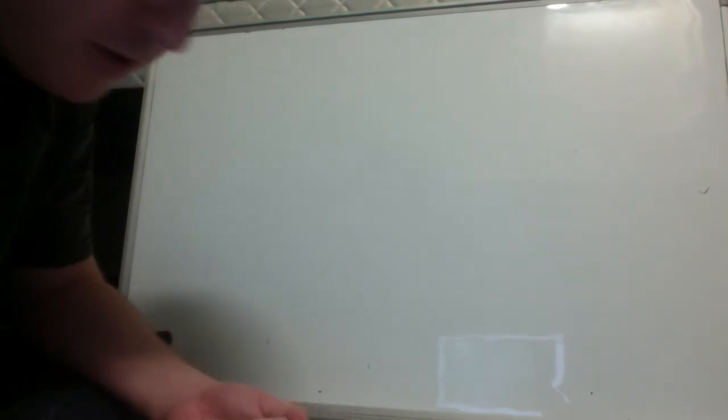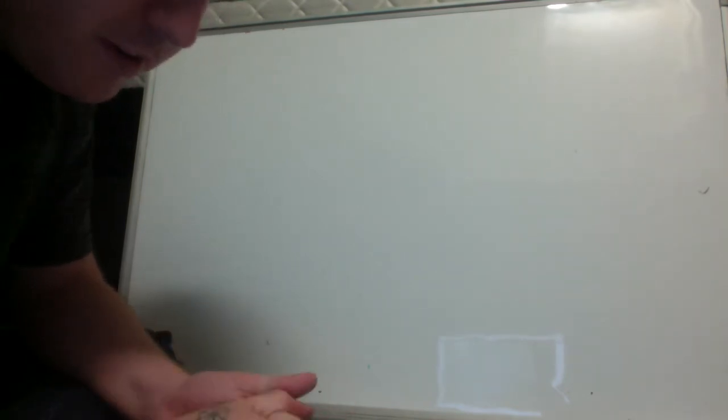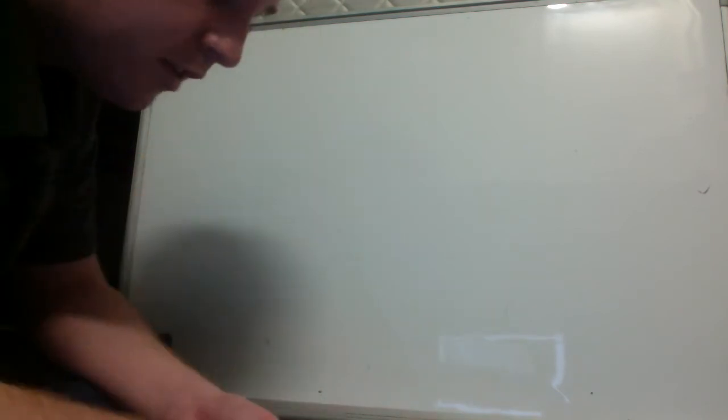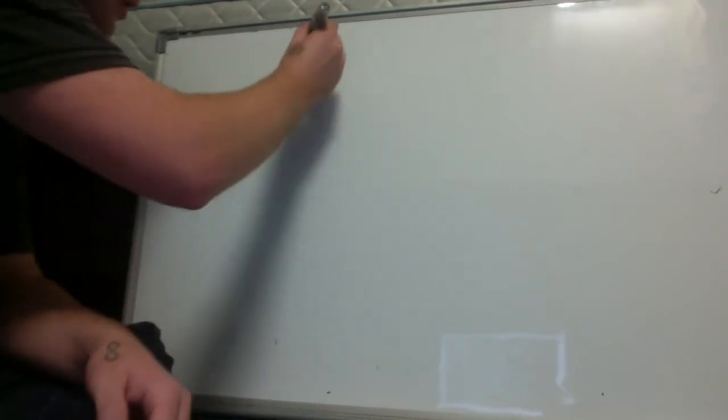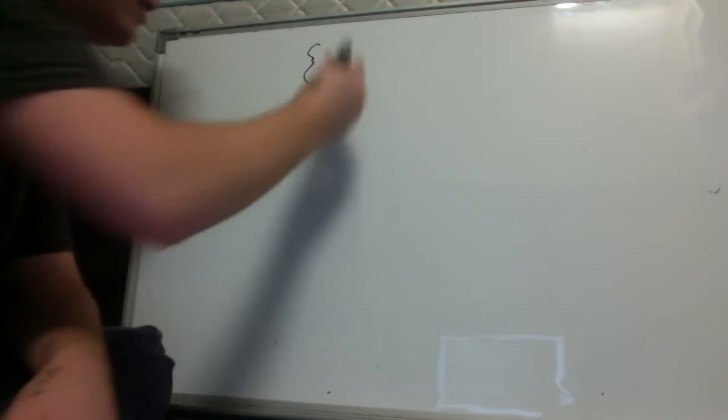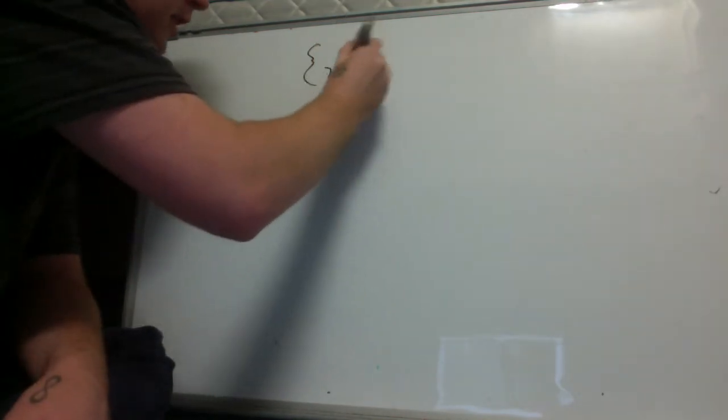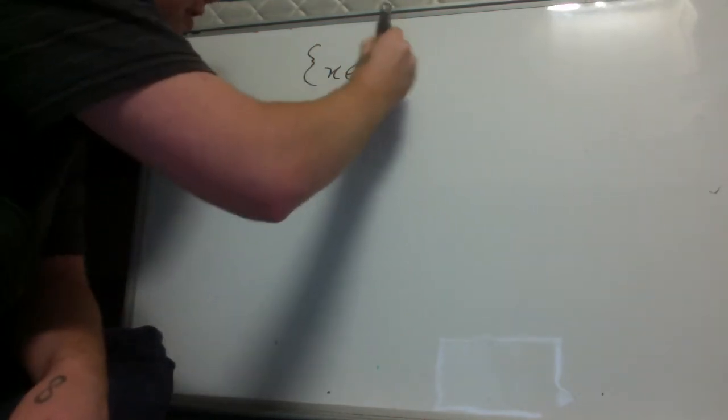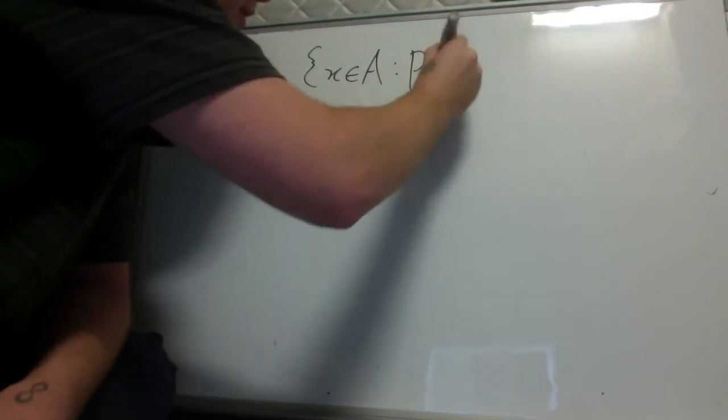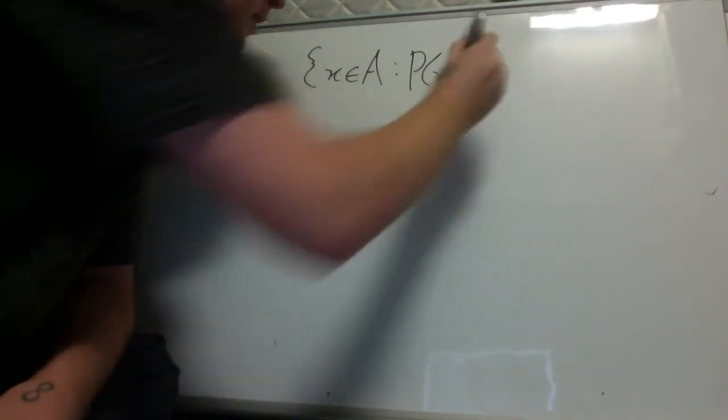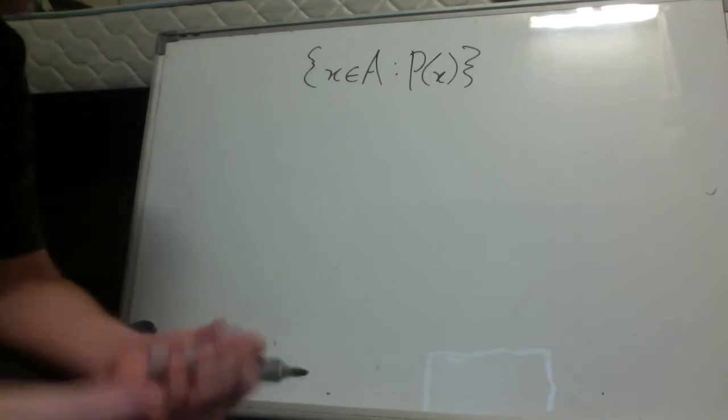So we're gonna start with what's called set builder notation. Set builder notation is a way of specifying a set. We write curly brackets to denote a set. So curly bracket x element a such that p of x. This is the set builder notation.